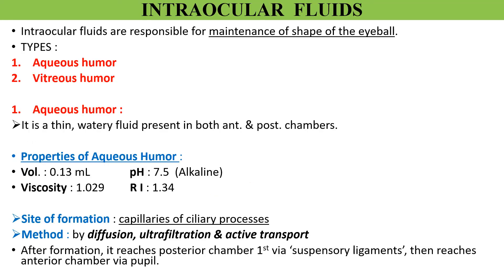Next is the role of intraocular fluids, namely aqueous humor and vitreous humor, in the maintenance of a clear refractive media of the eye. Intraocular fluids are responsible for the maintenance of the shape of the eyeball. Aqueous humor is found in both the anterior and posterior chambers of the eye. It is a clear watery fluid with a refractive index of 1.34, a volume of about 0.13 milliliter, and an alkaline pH. It is produced at a rate of 2.3 ml per minute by the capillaries of the ciliary processes by diffusion, ultrafiltration, and active secretion.